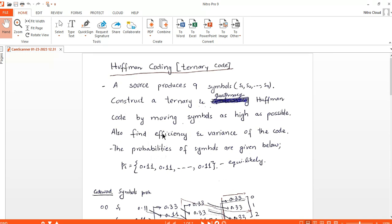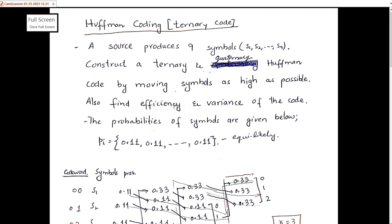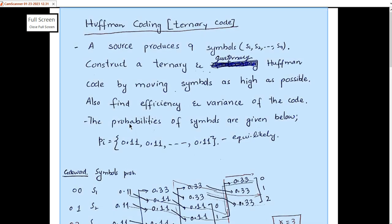In this session we are going to discuss Huffman coding where the code pattern is ternary and quaternary code. We will solve two examples. The first example involves a source producing nine symbols s1 through s9, where the probability of each symbol is 0.11, meaning all symbols are equiprobable.